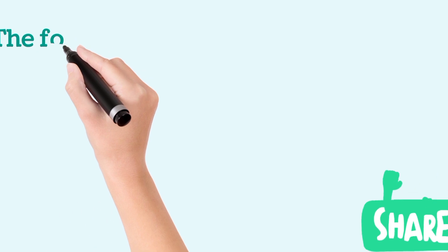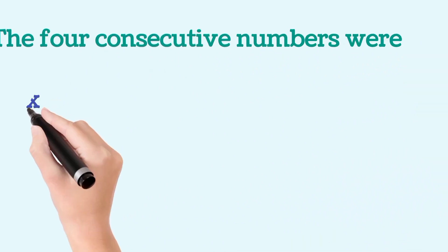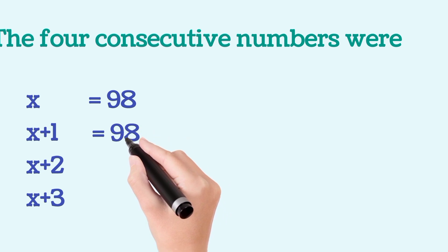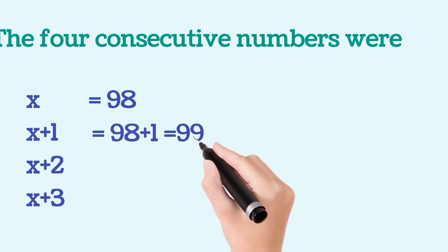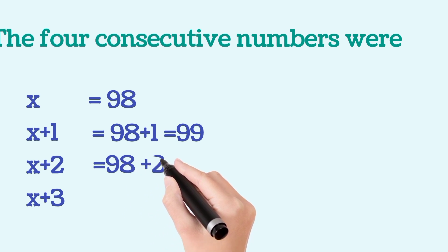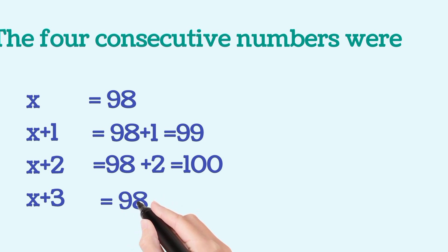Now, the 4 consecutive numbers that we assumed were x, x plus 1, x plus 2 and x plus 3. So, x is 98, x plus 1 will be 98 plus 1 that is 99, x plus 2 will be 98 plus 2 that is 100 and x plus 3 which is 101.